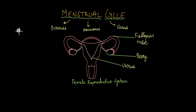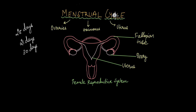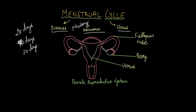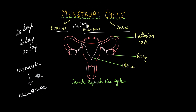The menstrual cycle lasts around 28 days on average in most women — it could be 21 days in some or even 30 days in others. Three major players regulate this cycle: the ovaries, the hormones of both the ovaries and the anterior pituitary, and the uterus. It's called a cycle because it repeats from menarche, starting at around 13 years of age, all the way to menopause at approximately 45 to 50 years of age.